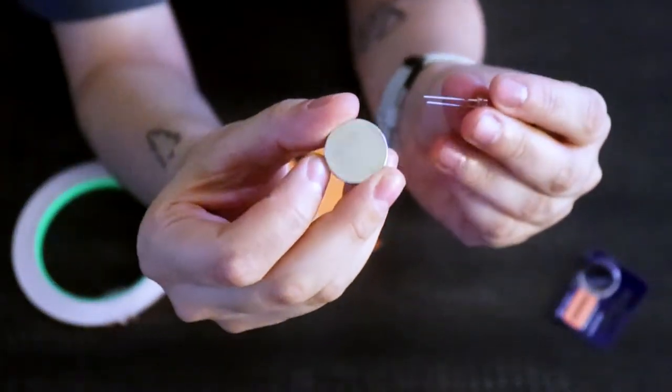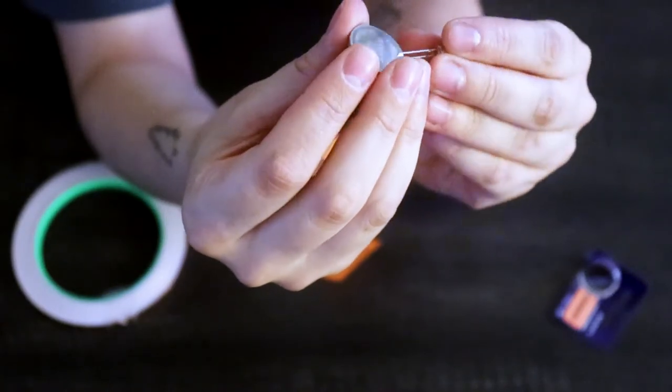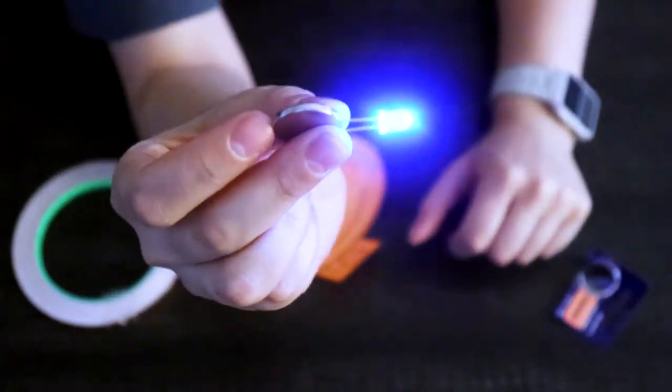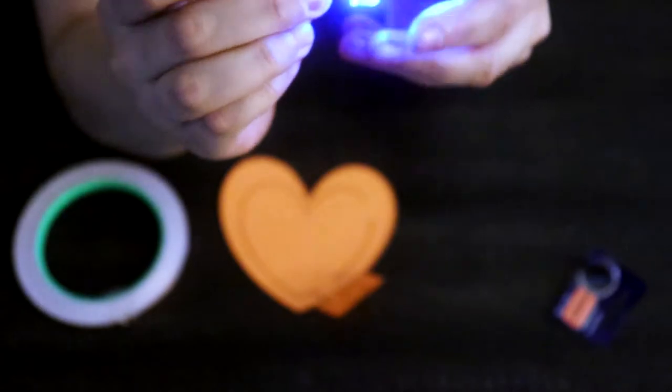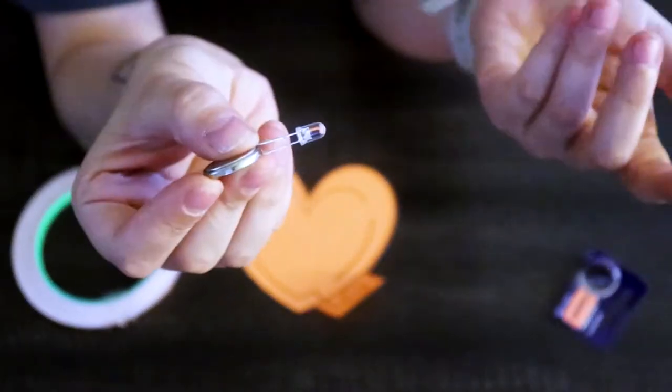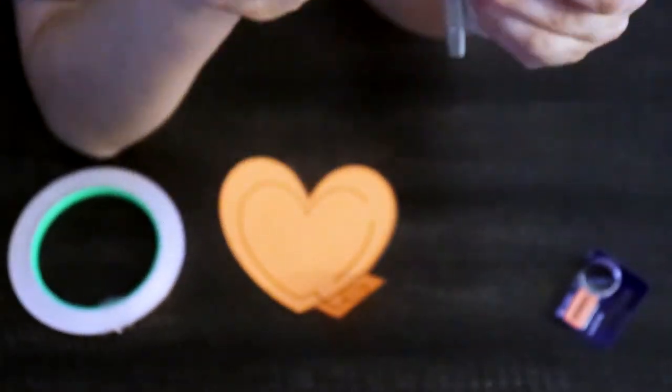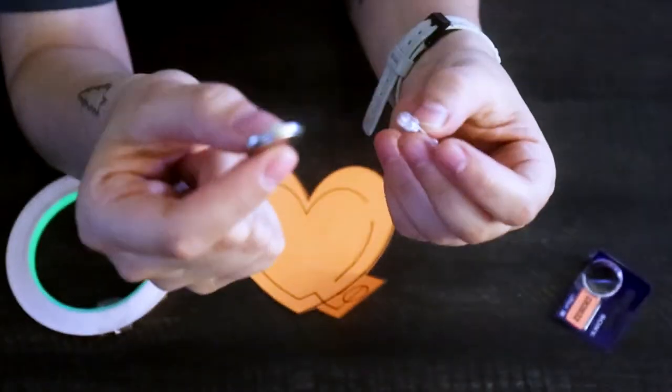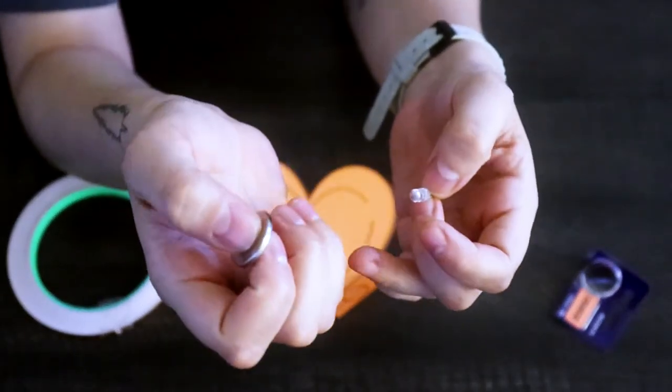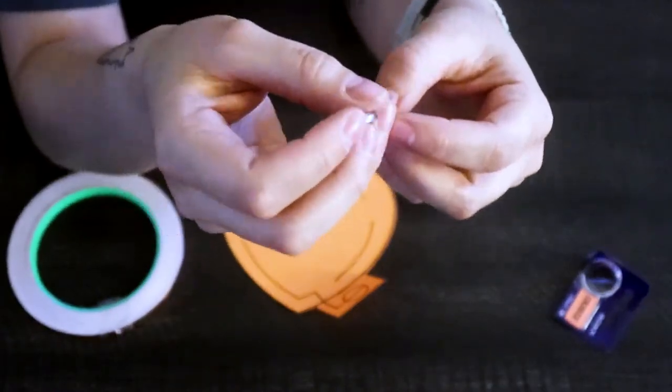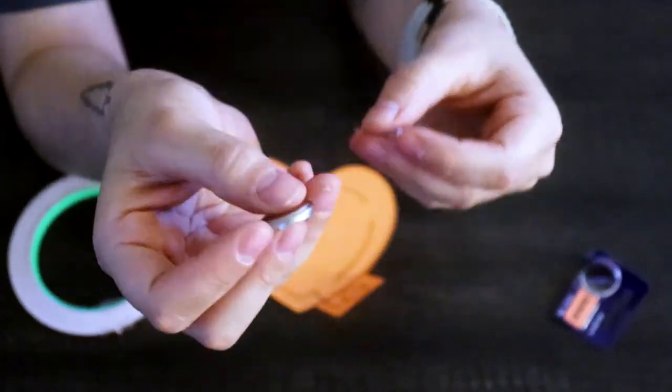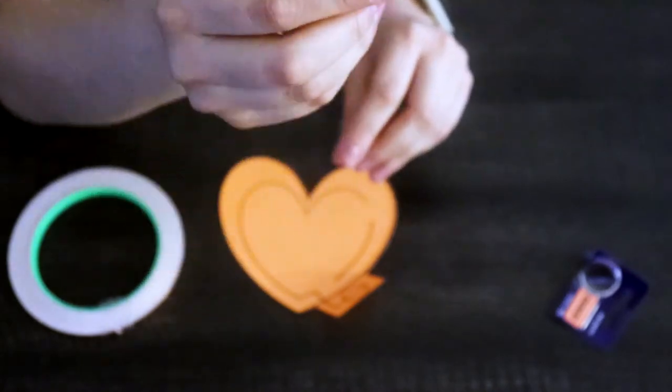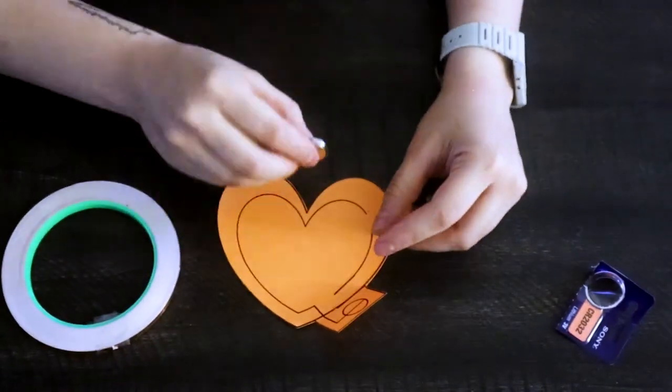So when I put the positive leg on the positive side and the negative leg on the negative side, it lights up. If I do it the other way, it doesn't work. So basically the positive and the negative allow electricity or the electrons to flow through the circuit in the correct direction. So we have to make sure those things match up.